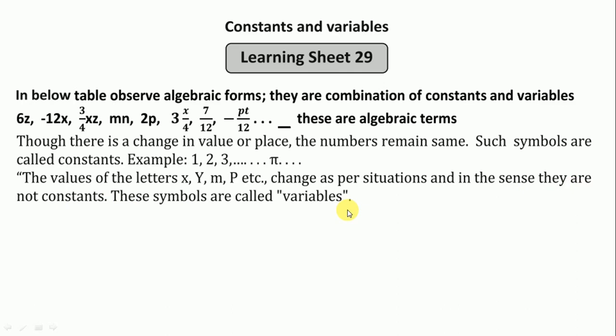We see one example to identify constants and variables: 2x plus 5. Most of the students do mistake here, they are taking 2 as constant. It is not constant. See here, 2x means x plus x is equal to 2x.